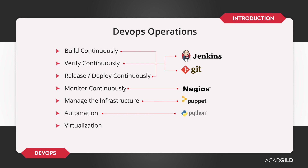Last but not the least is virtualization. How are you going to manage your hardware apart from the physical hardware? How are you going to manage your microservices — your applications or services which need full-fledged hardware? For these, we are going to use a non-virtualization concept, i.e., containerization. This is achieved by implementing Docker.